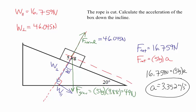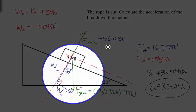When solving problems with objects on ramps, the biggest difficulty is calculating the parallel and perpendicular components. Being able to draw those components properly is the most important thing. Most people draw the perpendicular component correctly, but often make mistakes with the parallel component. Make sure you draw the parallel component of gravity actually parallel to the ramp — that's what breaking a vector into components means: finding how much of the vector lies along each axis.